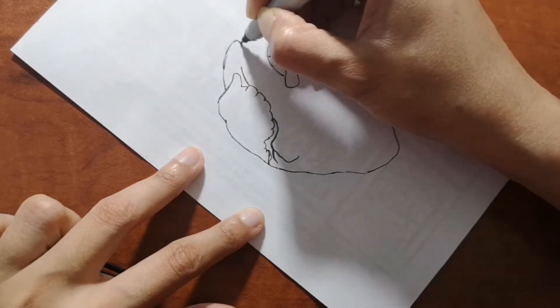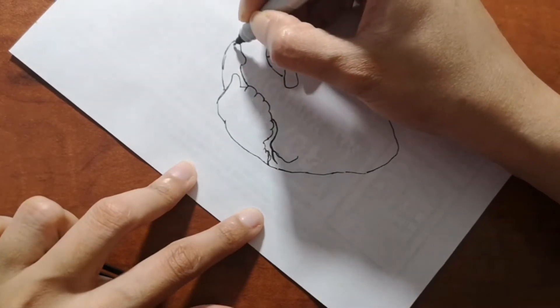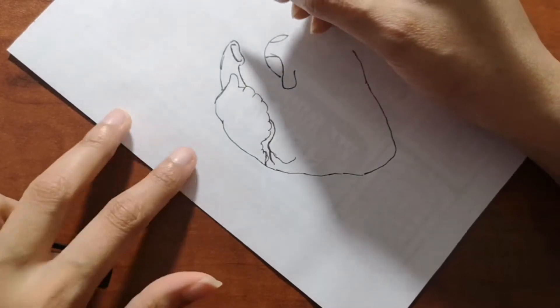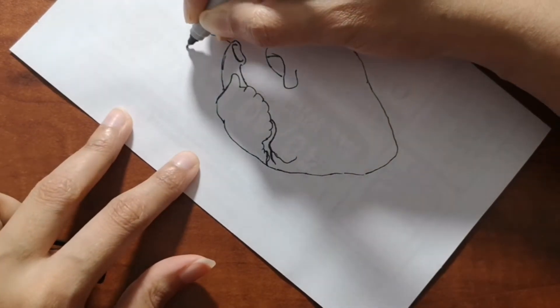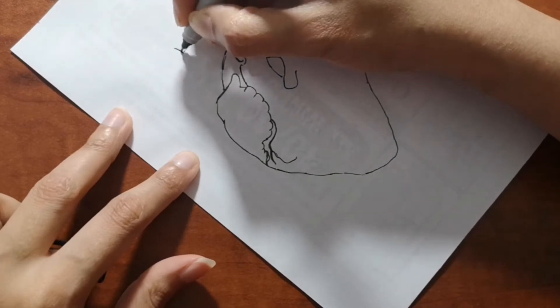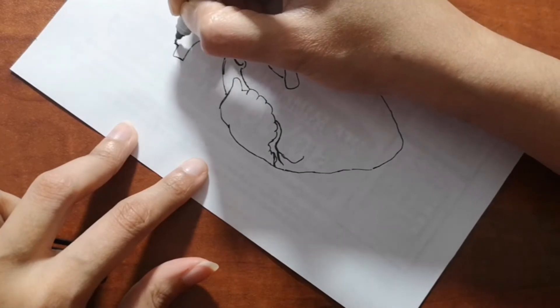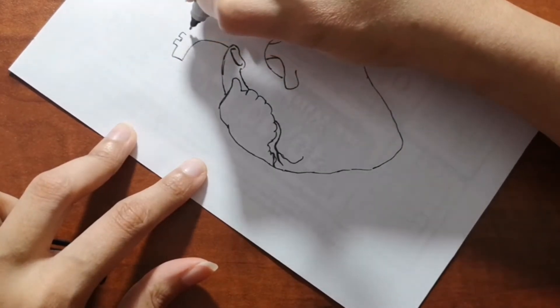For coloring I'm going to use color pencils and I will show you how and where I use red, because I'm not going to use red for the whole heart. I'm going to show you where you have to make the heart dark red.